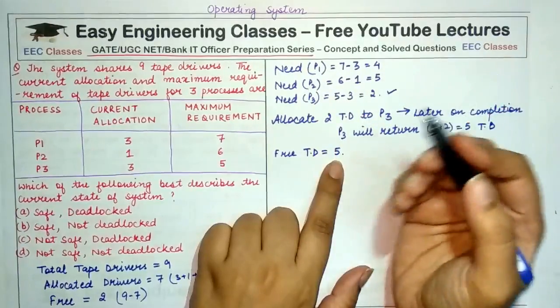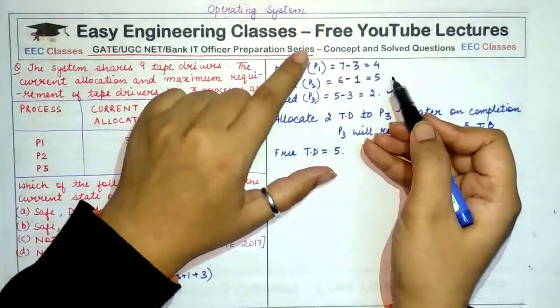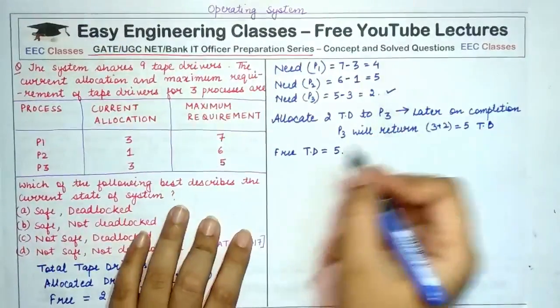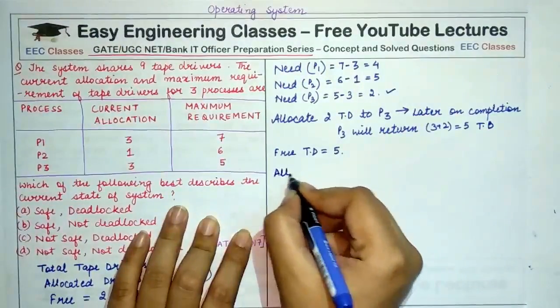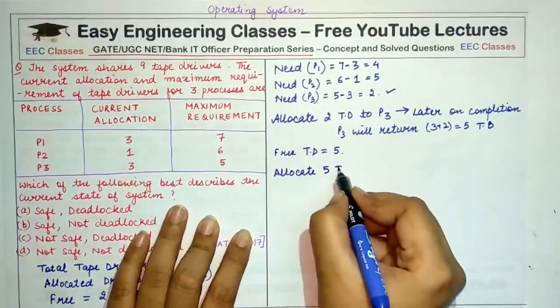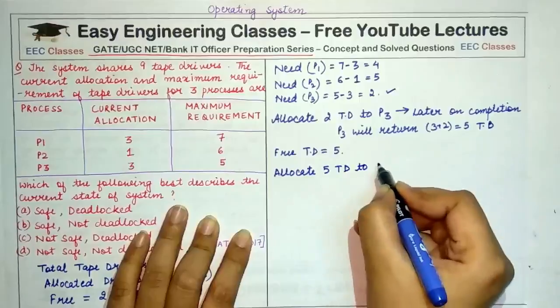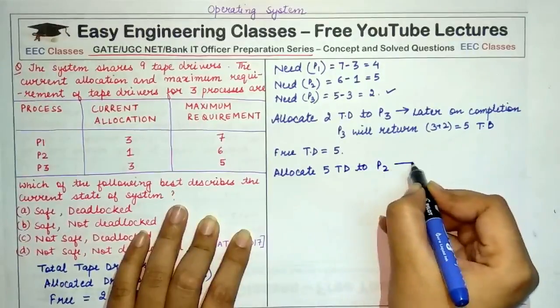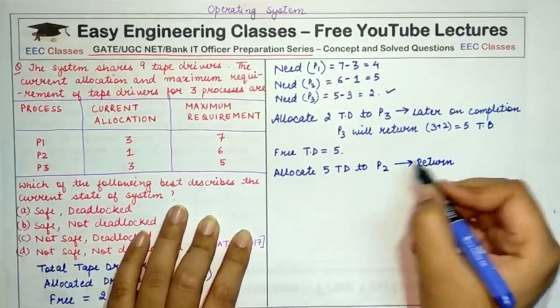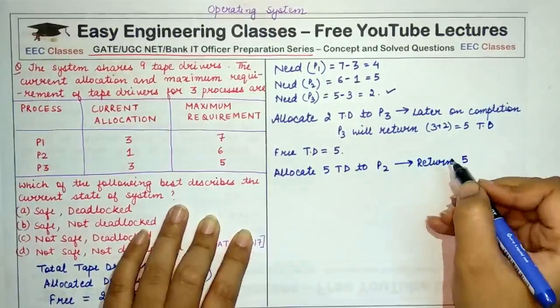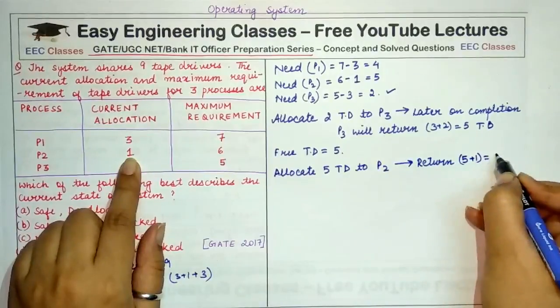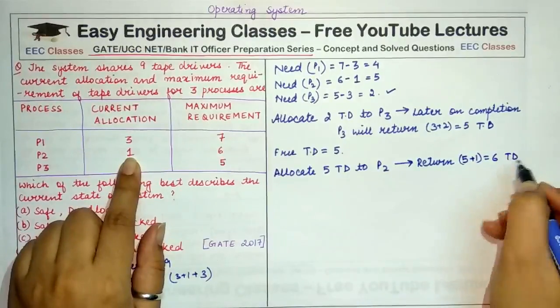As you choose, you can choose any out of P1 and P2. I am choosing P2. So I allocate now the required 5 tape drivers to P2 and later when P2 completes, it returns to me these 5 tape drivers plus the initial one that was allocated to it. So it returns 6 tape drivers after it has completed.